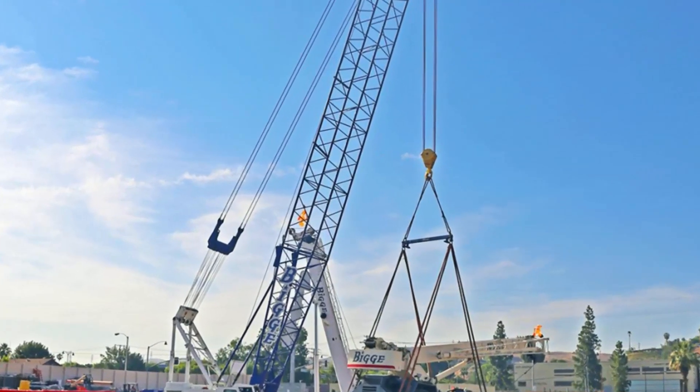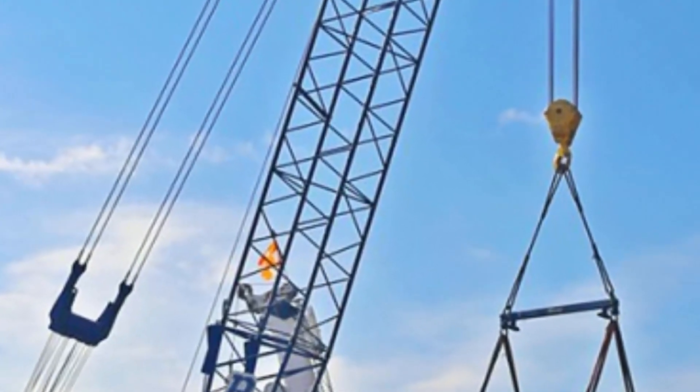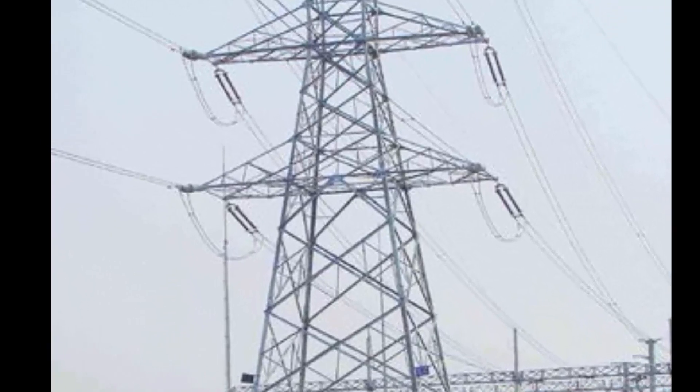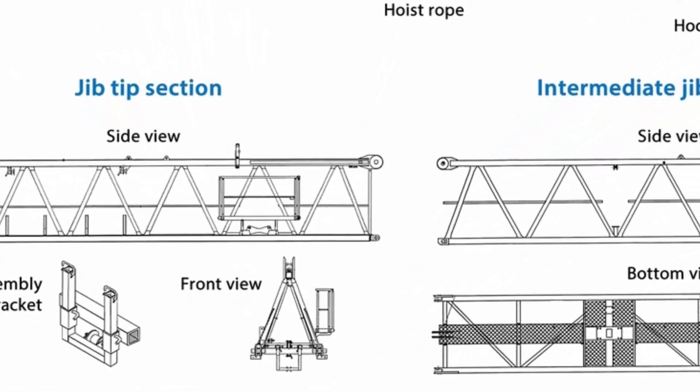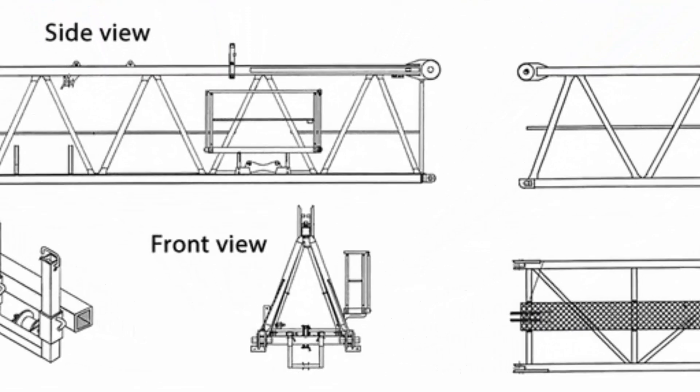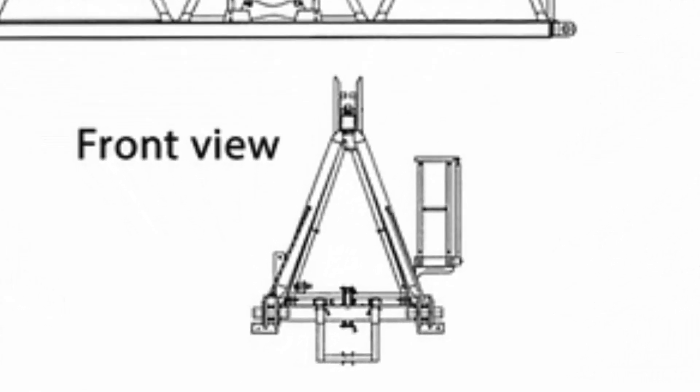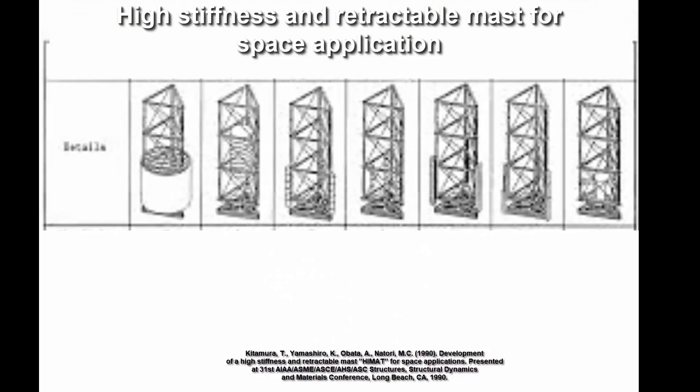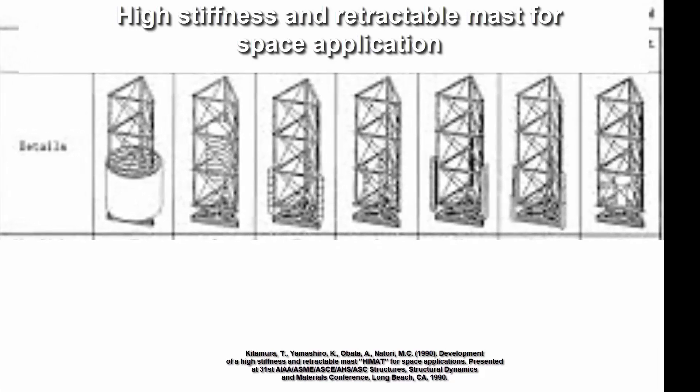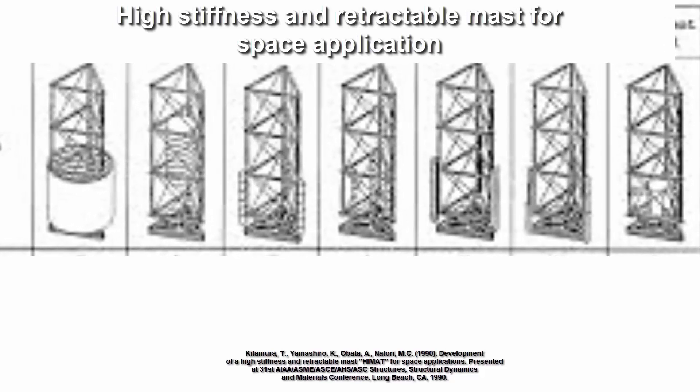There are many other structures where truss of triangles is used as in the case of cranes. For some cranes the cross section of the main boom is also made in triangular form as in this case. These masts which maintain excellent stiffness during deployment are made out of triangular trusses with triangular cross section.